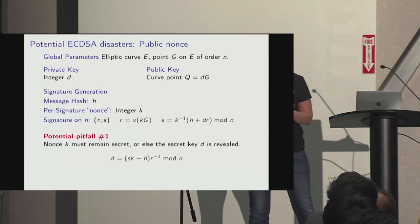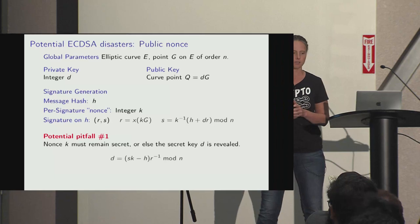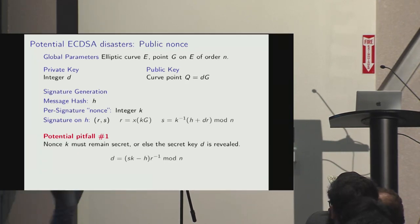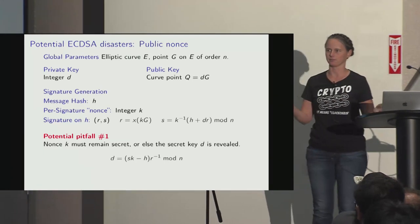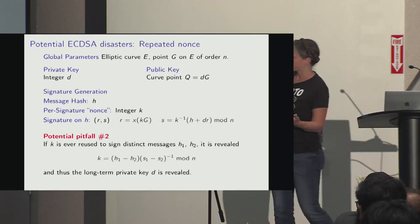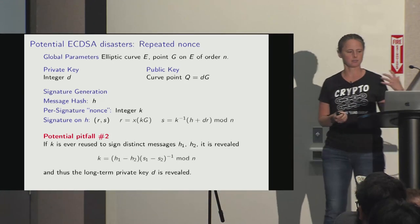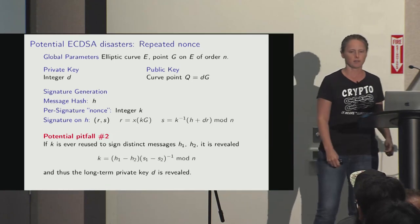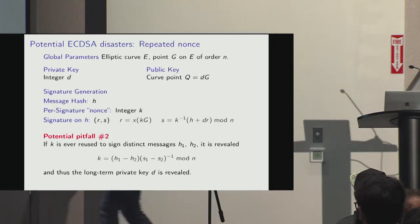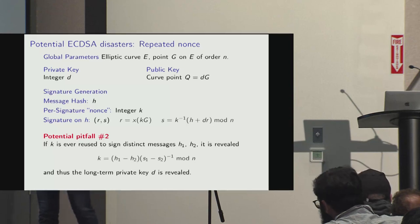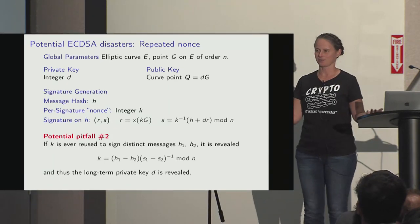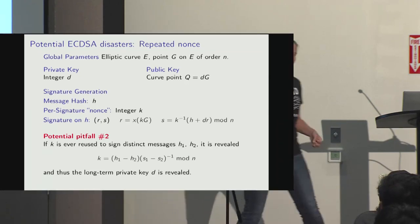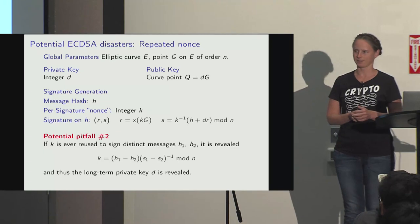K must remain secret for all signatures you ever generate, or else your long-term secret key D is revealed — you just invert the equation, which is a good undergrad exercise. If K is ever reused to sign two distinct messages with different hashes H1 and H2, it's trivial to compute K by solving two equations with two unknowns, then compute the long-term secret key. This is a well-known flaw that keeps coming up due to random number generation issues.